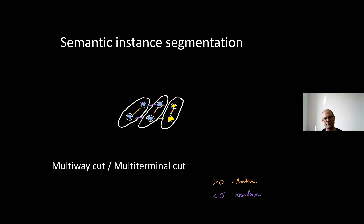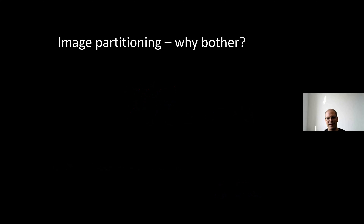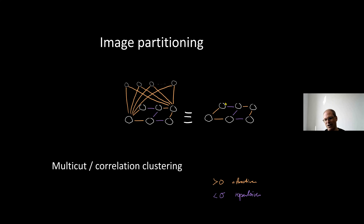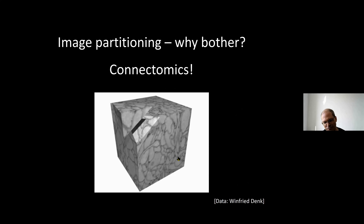For pure image partitioning with no semantics, the extra terminal nodes don't have informative edge weights - all those edges have the same cost, so we can omit them entirely. This gives us a simpler model, which is called the multi-cut or correlation clustering problem. This turns out to be a good model for connectomics, as Björn Andres first found.